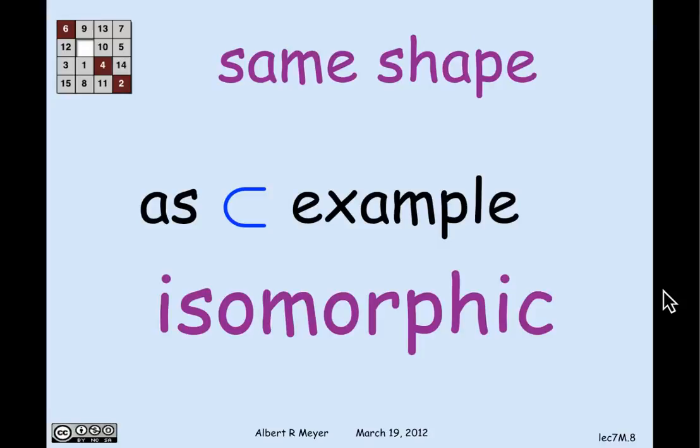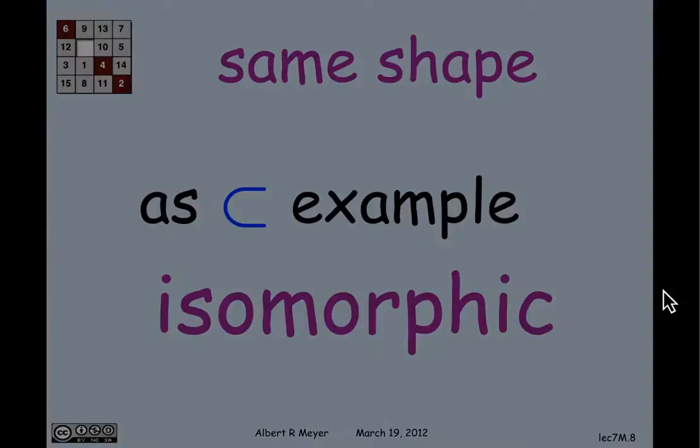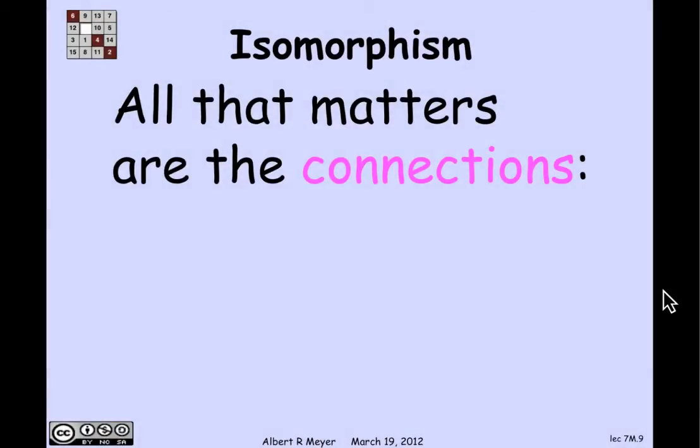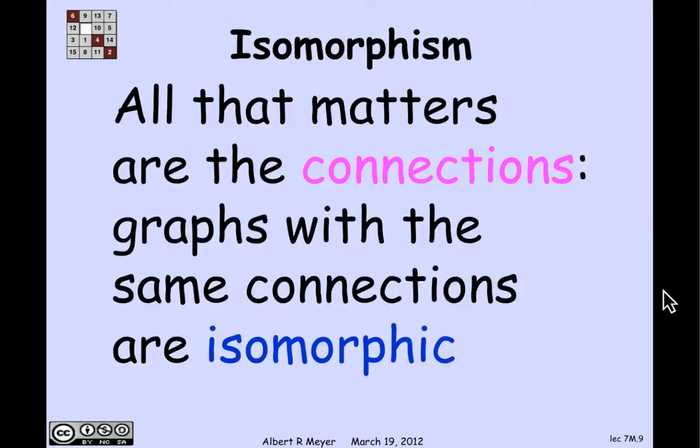And the precise notion or sense in which these things have the same shape, obviously, they can be drawn and one superimposed on the other. But abstractly, what we care about with partial orders and digraphs in general is when things are isomorphic, the technical name for the same shape. Isomorphic means that all we care about are the connections between corresponding vertices. Two graphs where the vertices correspond in a way that where there's a connection between two vertices, there's also a connection between the corresponding vertices are isomorphic.